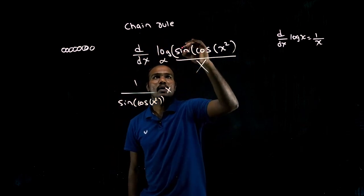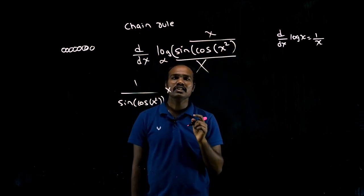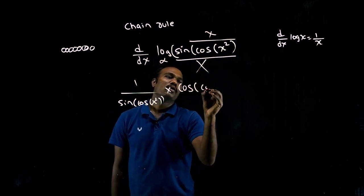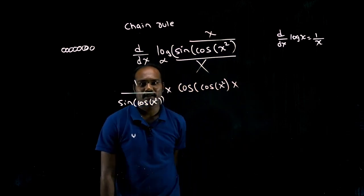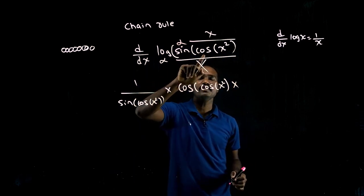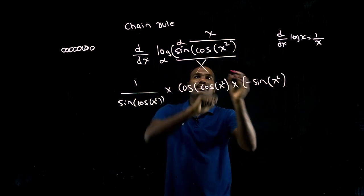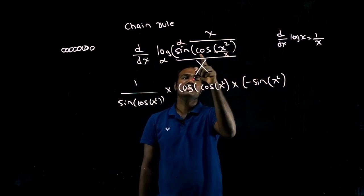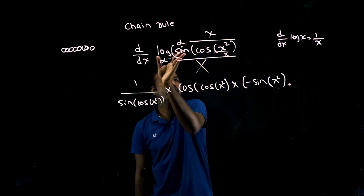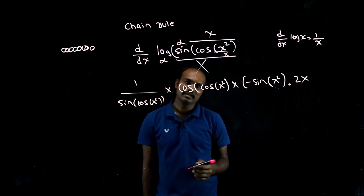I am seeing sine. Now I have to differentiate this. Whatever is inside, think of it as x again. Sine x differentiation is cos. But in place of x there are more functions: cos of x squared. Multiply. Now this is also done. Next is cos. Cos differentiation is minus sine, then x squared. x squared differentiation is 2x.